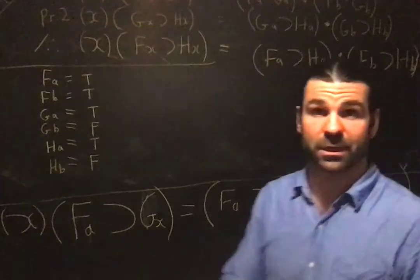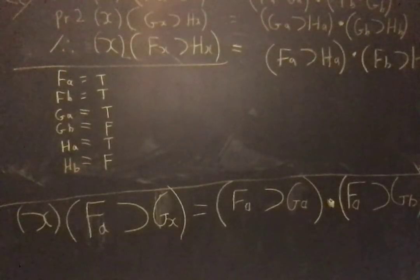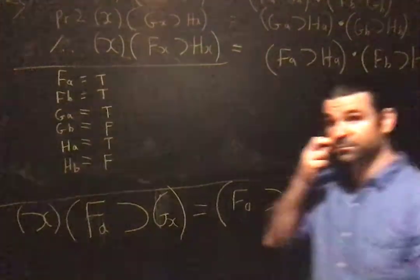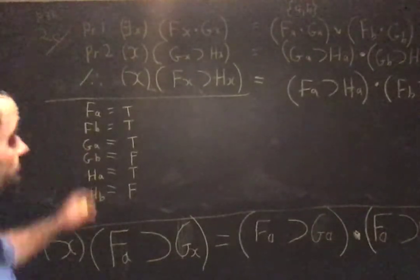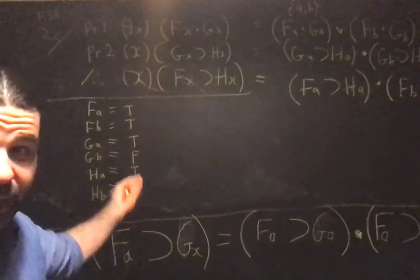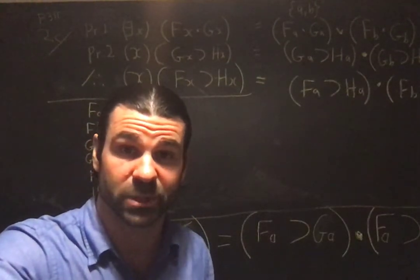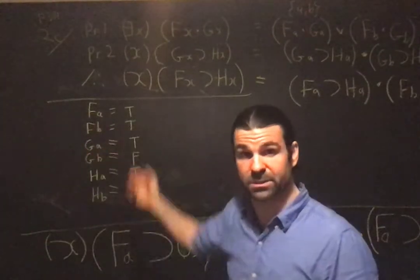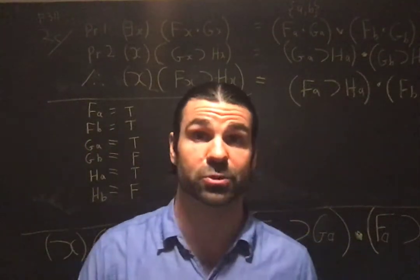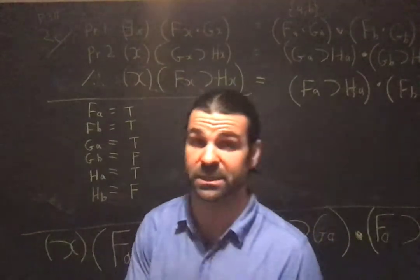So I have worked out another example for you, this is I think c, 2c, c for Clarence. Okay, so here is 311.2c. Let me run through what you're supposed to do to answer this question. You'll be presented with an argument like this and asked, use the model universe method to show that this argument is invalid, to prove that this argument is invalid.